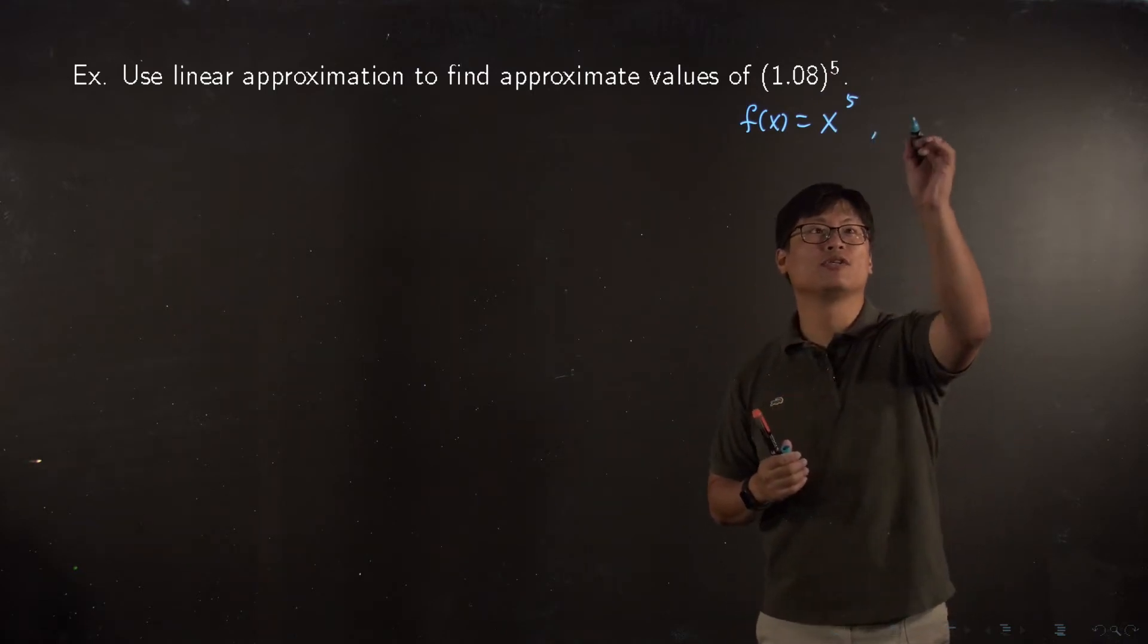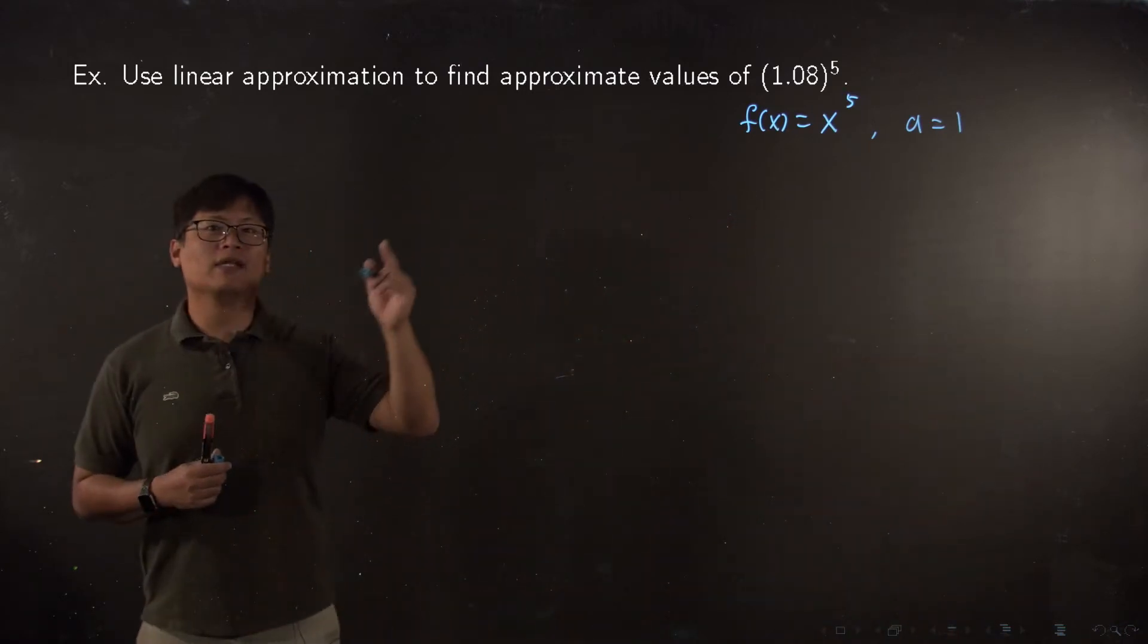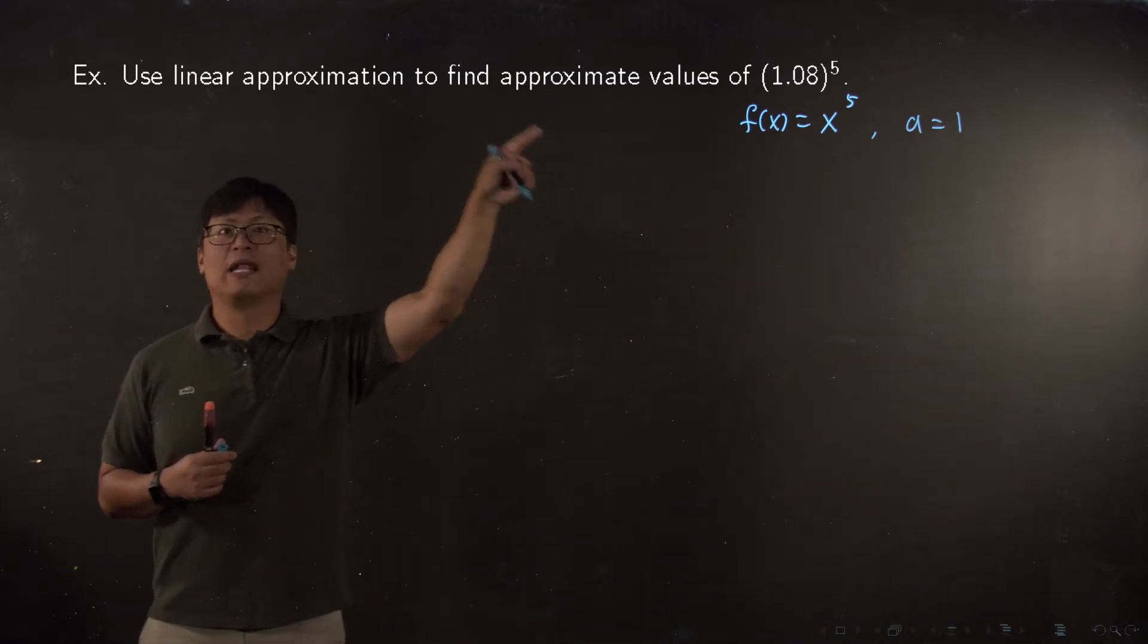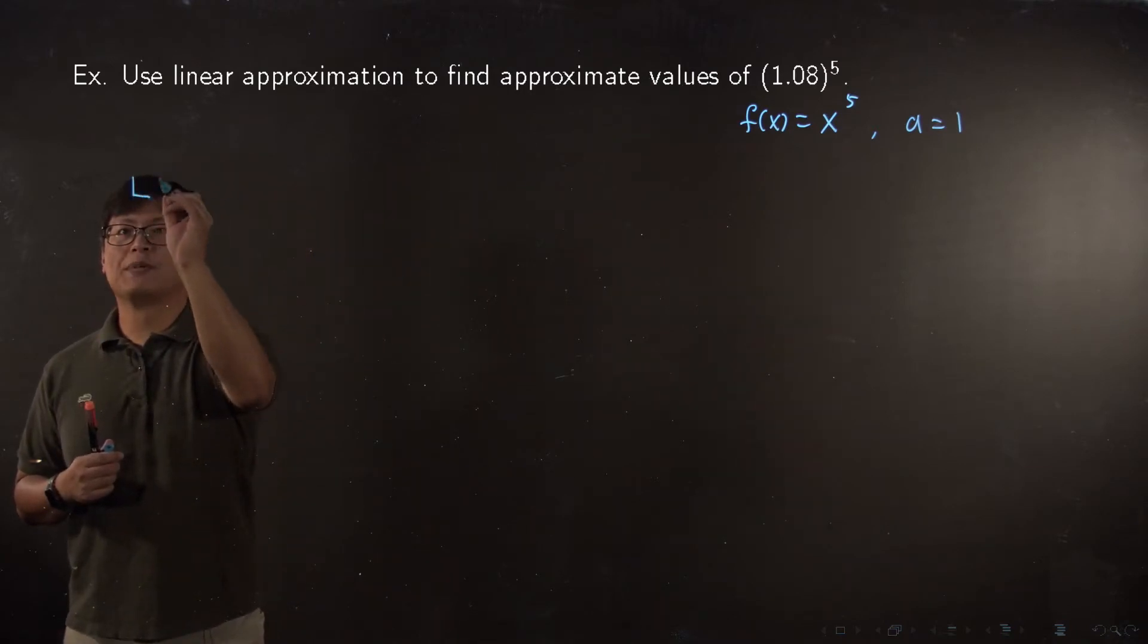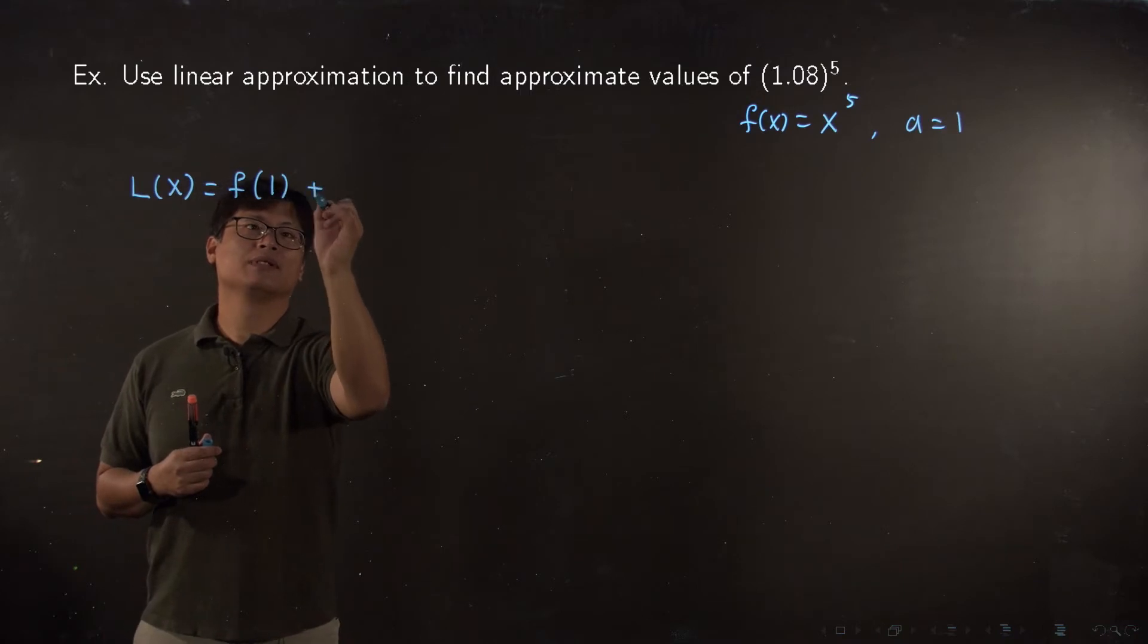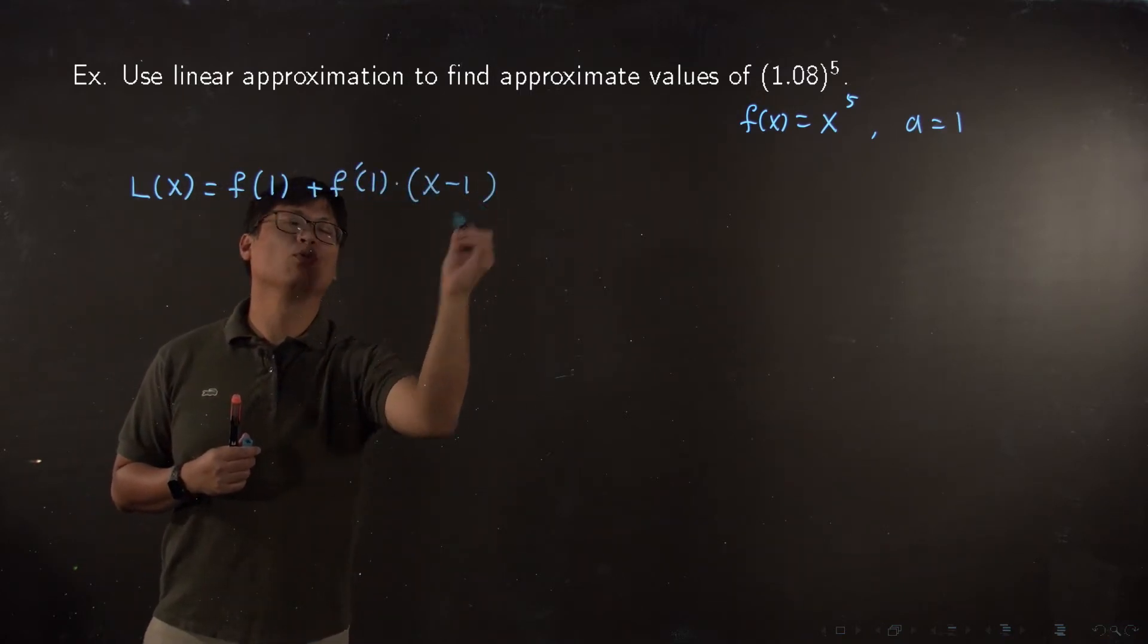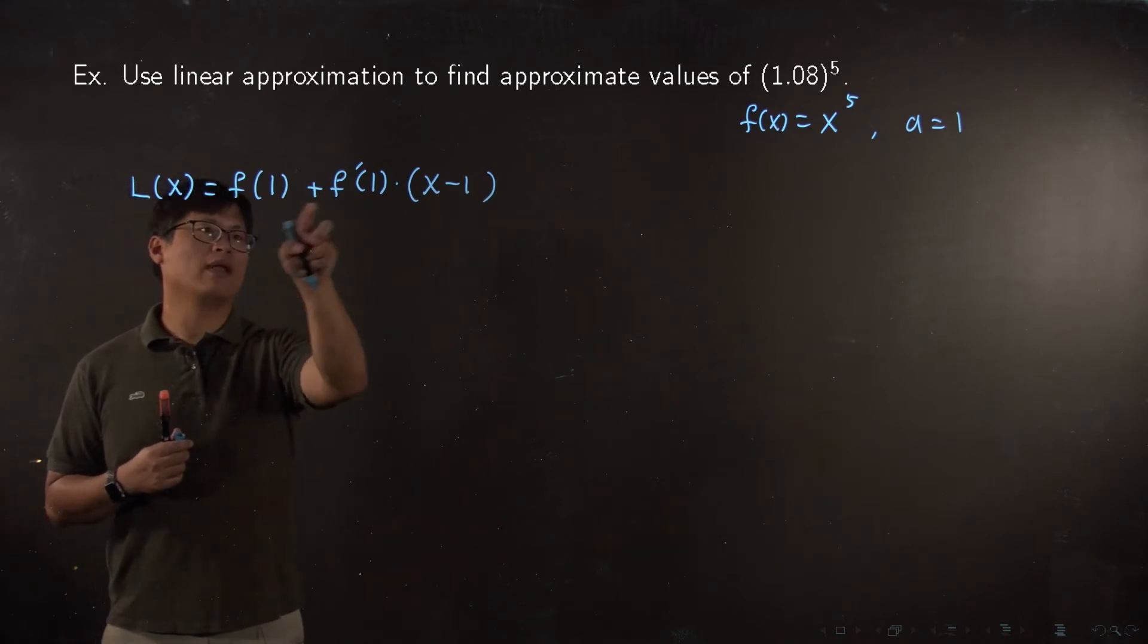That's why we can choose a equals 1. Now we can start from here. What is the linear approximation for this function at that point? L(x) equals f(1) plus f'(1) times (x minus 1). We need f(1) and f'(1).